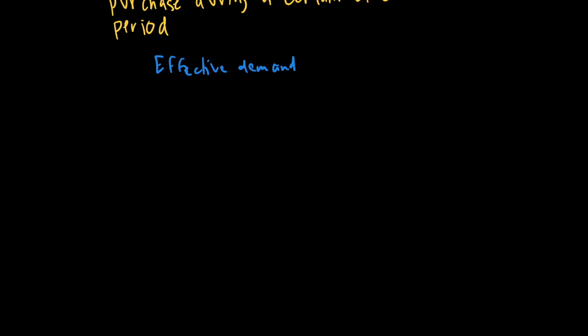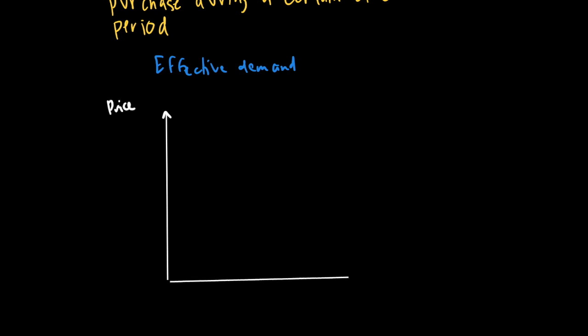Let's see that in terms of a diagram. On my y-axis I will have the price of the good. Let's say this is demand for cars in a particular period. On my x-axis I'm looking at quantity bought or sold in the market. The demand curve is a downward sloping graph.